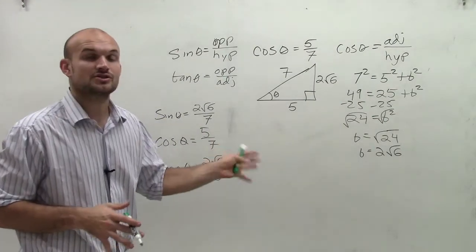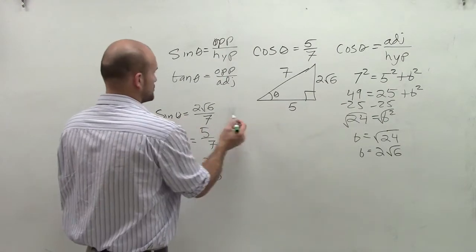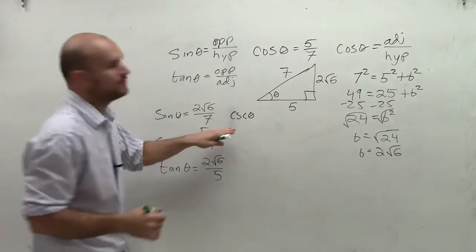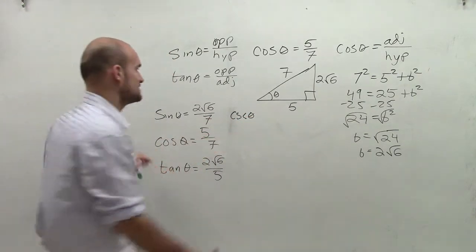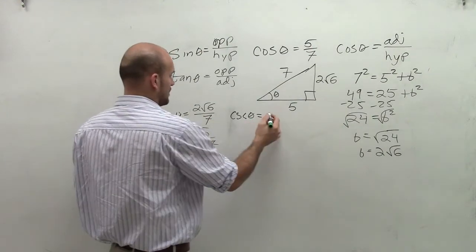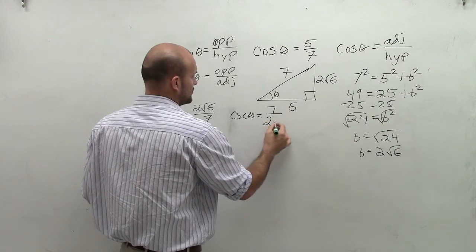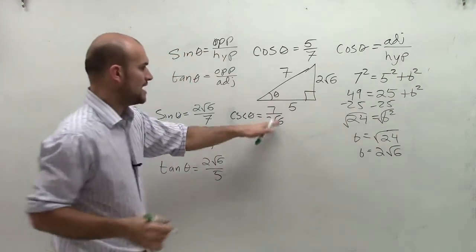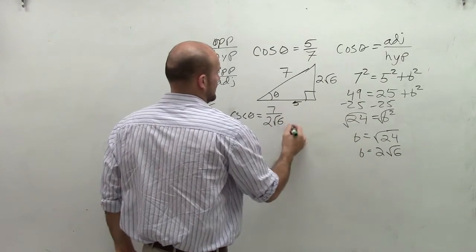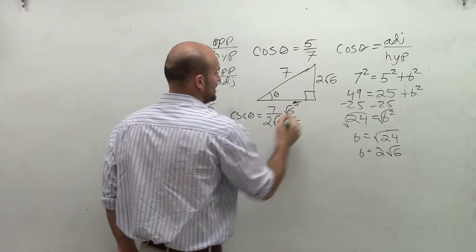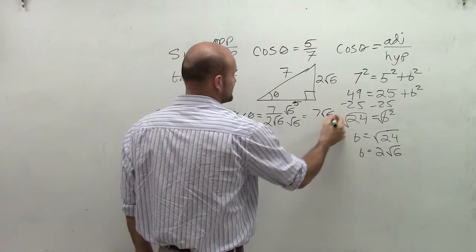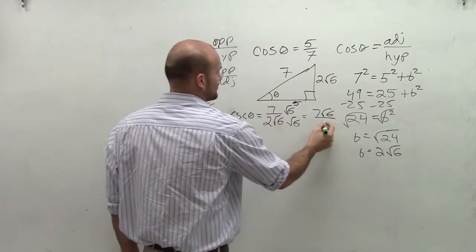Now, remember, they asked us to do the reciprocal functions as well. So the reciprocal of sine is cosecant of theta, meaning what I'm going to do is I'm going to take the reciprocal of this function. So the reciprocal of 2 radical 6 over 7 is going to be 7 over 2 radical 6. Now, to get rid of my denominator, I need to make sure I rationalize the denominator, multiply by 6 over 6. And therefore, I get 7 radical 6 over 12.